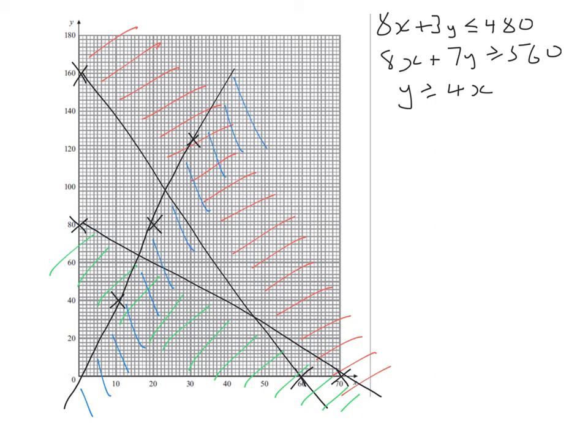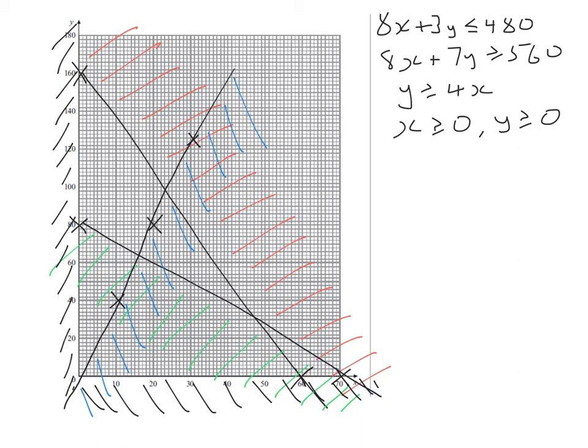Now there are two other regions that you may have noticed I ignored. And that was x is positive and y is positive. Most linear programming questions involve numbers of real things. So you can only have positive numbers. Easy to forget this. There will be a mark going for this. Let's shade in this bit. So we're only having positive y numbers. And let's shade in this side. So we're only having positive x numbers. So this means that this region here is the feasible region. In other words, all solutions to this problem lie within that region.